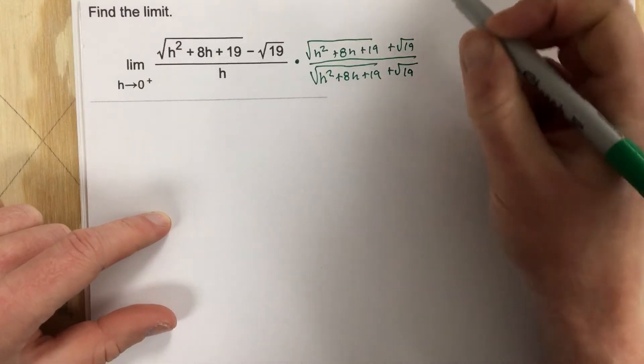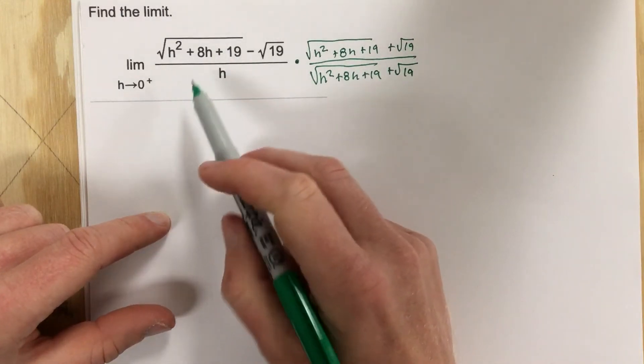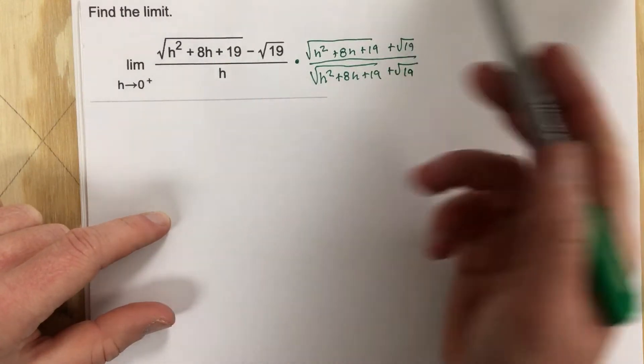And when I multiply the top and the bottom my goal is to get rid of the radical so I can cancel h. That's the whole point.